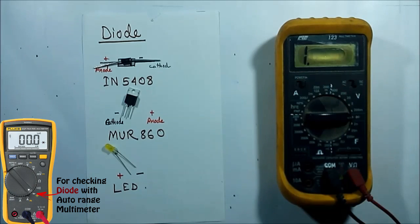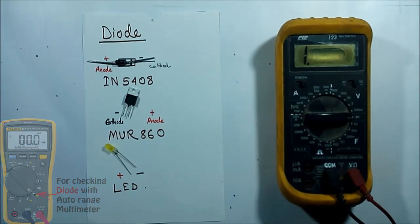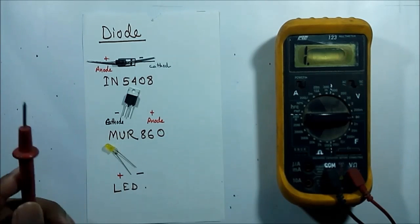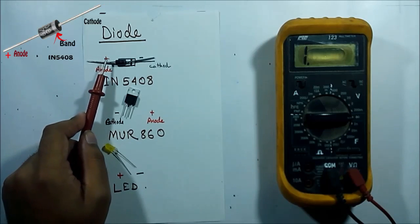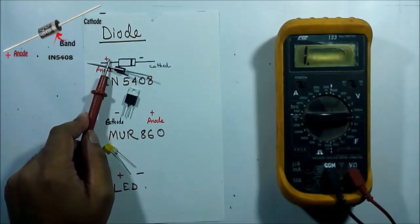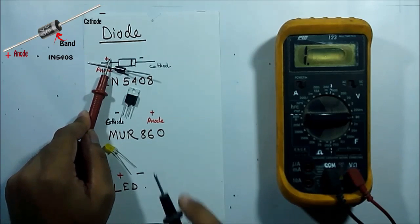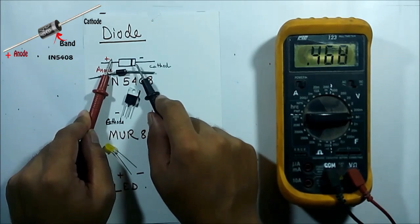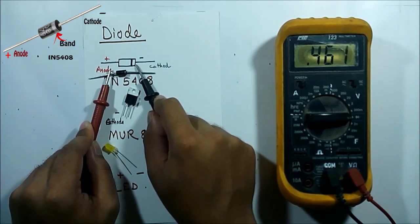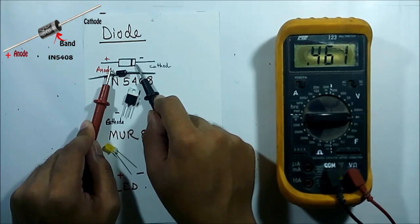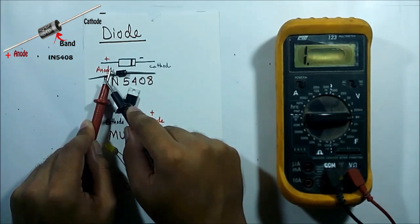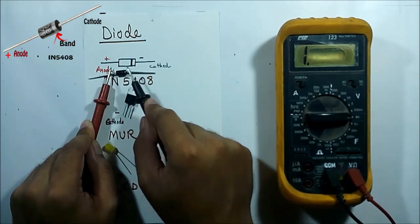Turning on the multimeter. Now to check the diode whether it is okay or not, I have to connect the red lead of the multimeter to the anode, which is the positive terminal of the diode, and the black lead to the cathode. You can see I am getting a value in the display, which indicates current can flow from anode to cathode.